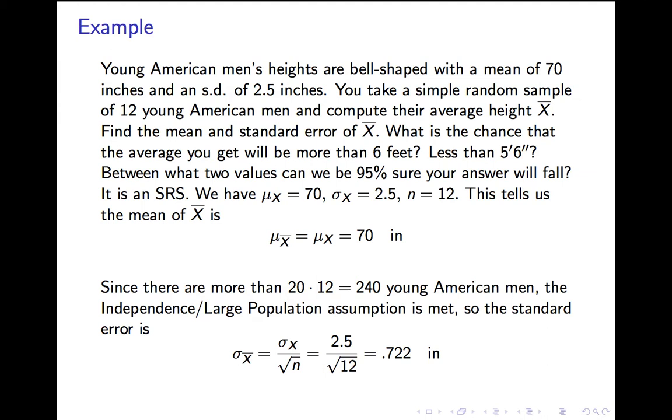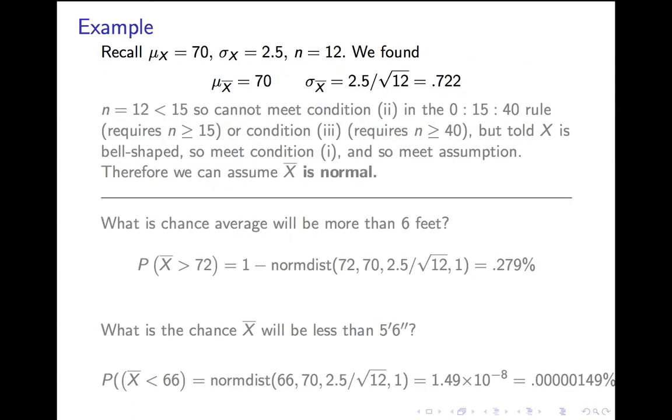Second assumption. We need the population, which is all young American men, to be at least 20 times the size of the sample, which is 12. So we need there to be at least 240 young American men? No problem. There's way more than that. So we can compute the standard deviation, or standard error, which is σ_X, 2.5, divided by the square root of 12, the sample size, and that works out to 0.722. Notice that's much smaller than the original standard deviation. X-bar tends to have a much smaller spread than X.